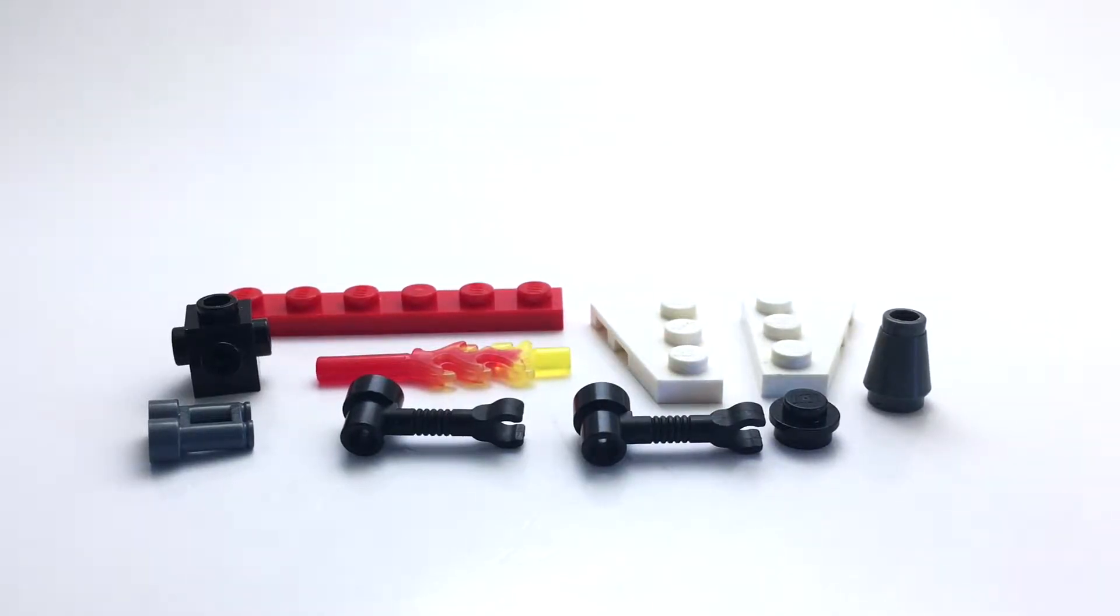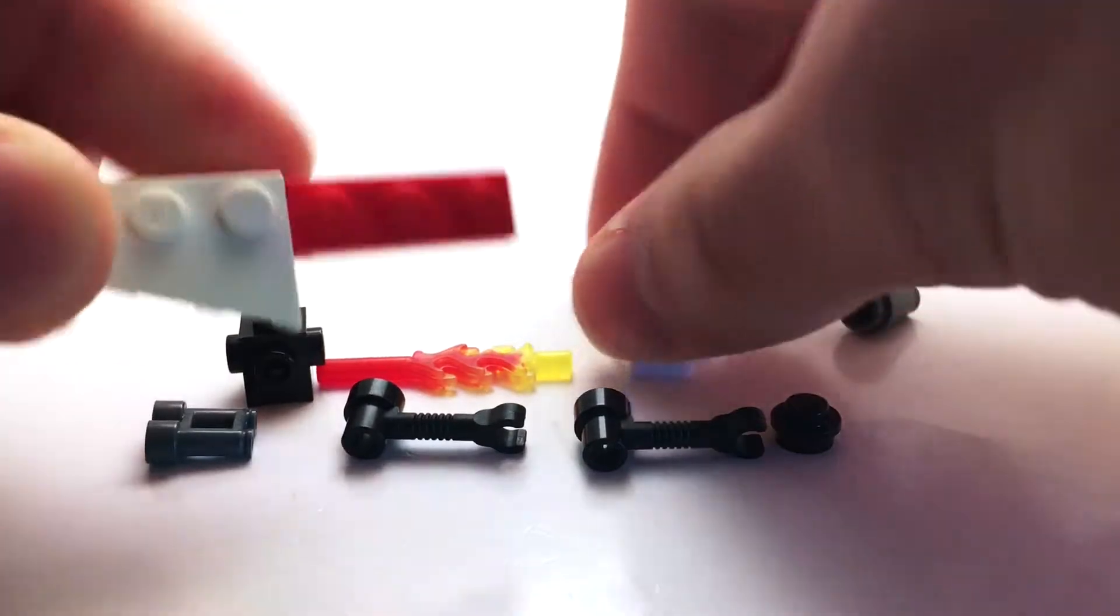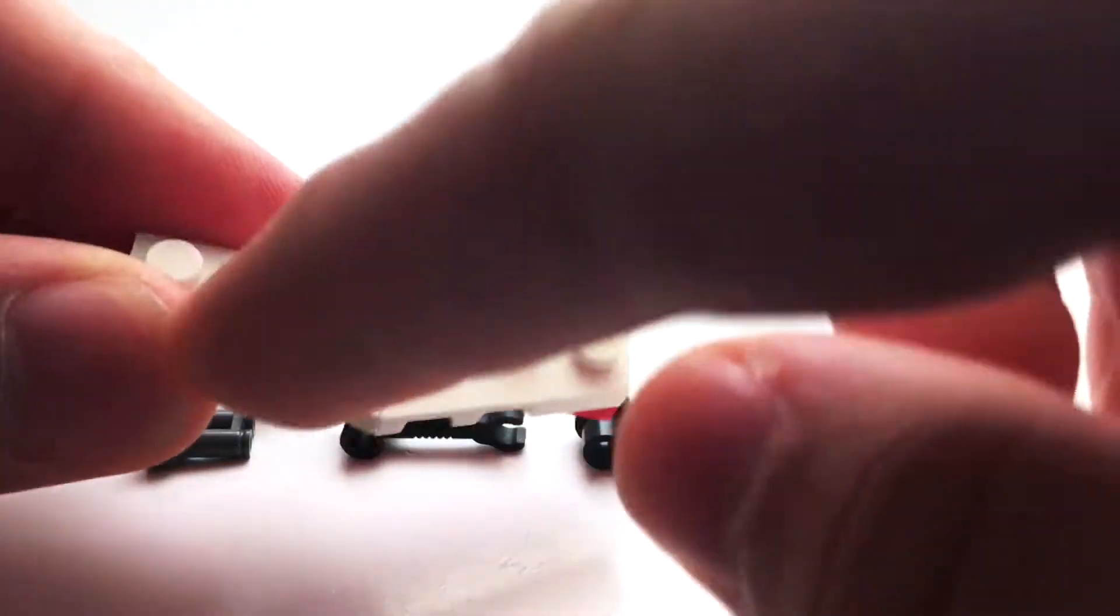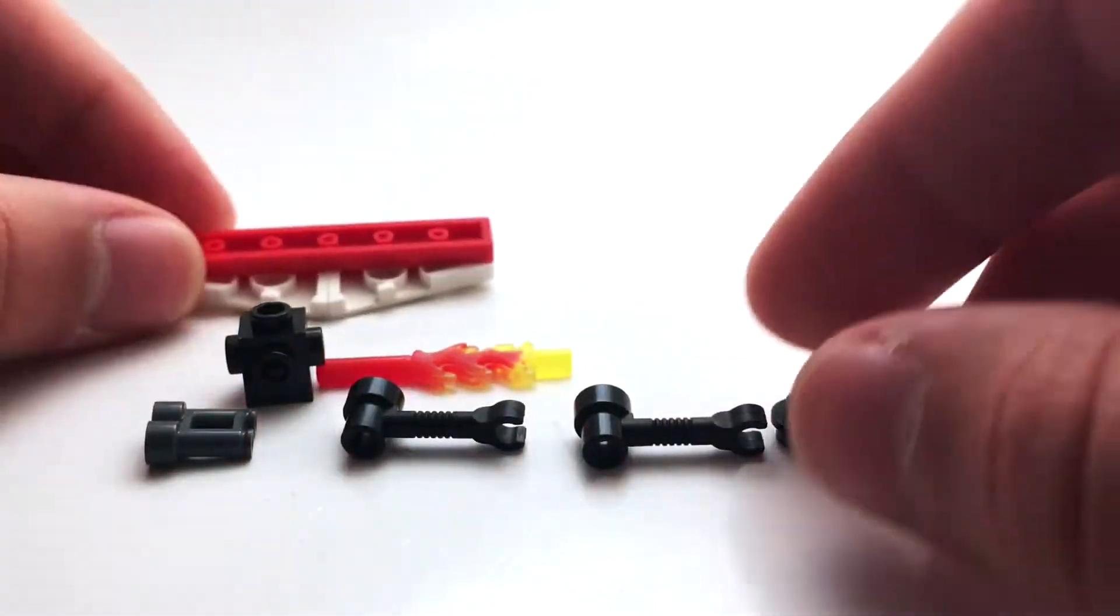Alright, here is our jet bot. So we can begin by building the wings. We have these two 1x3 special plates here that I just attached to this 1x6 red plate there.